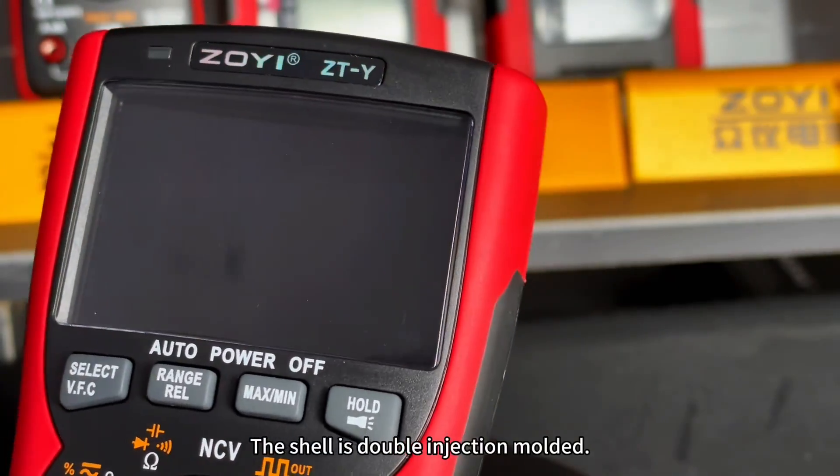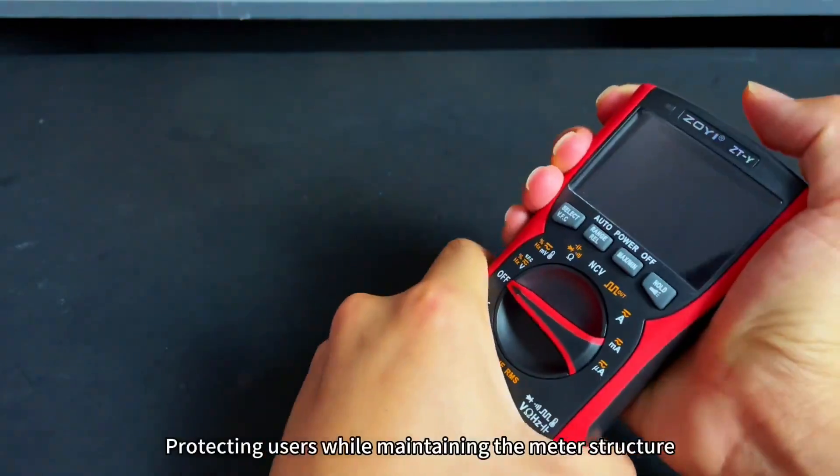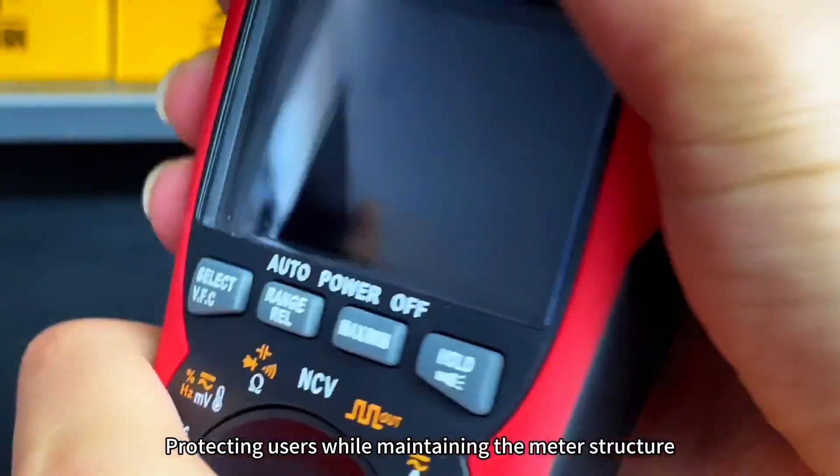The shell is double injection molded. The black part is hard ABS material, protecting users while maintaining the metering structure.